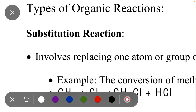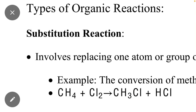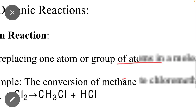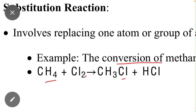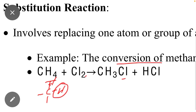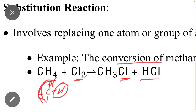The first is substitution reaction, which involves replacing one atom or group of atoms with another atom or group of atoms. For example, in CH4 there are four hydrogens attached to the carbon. One hydrogen can be substituted with another atom. When CH4 reacts with Cl2, one hydrogen is replaced by Cl, giving CH3Cl and HCl. This is known as a substitution reaction.